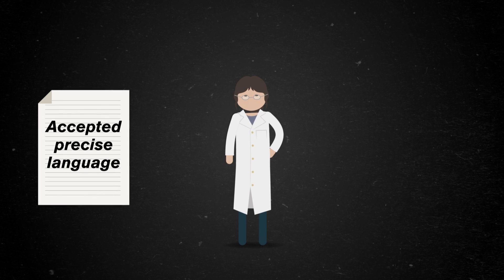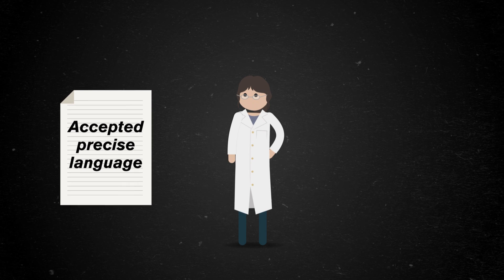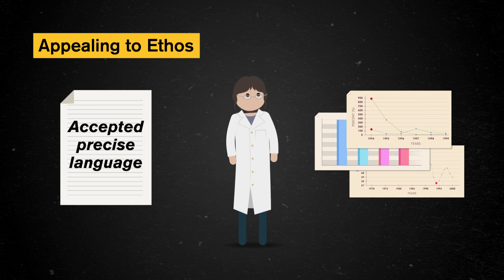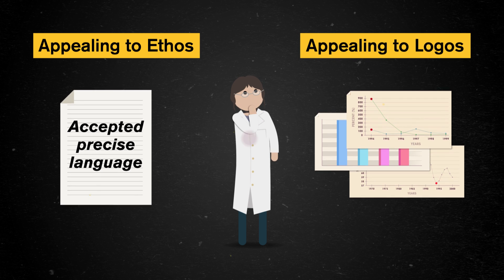Even in genres like scientific lab reports, where we're working hard to stay as unbiased and objective as possible, a writer is motivated by a purpose: to convince their colleagues that their findings are legit, and that their department is doing work worth funding. A scientific writer will use accepted, precise language to show credibility in the field — appealing to ethos — and include the graphs and calculations that support their claim — appealing to logos. These strategies are all part of convincing an audience of the value of the scientific findings.